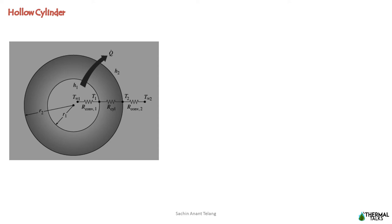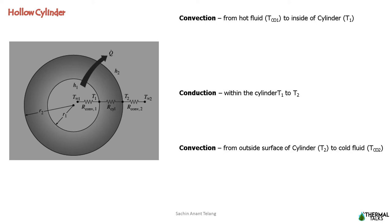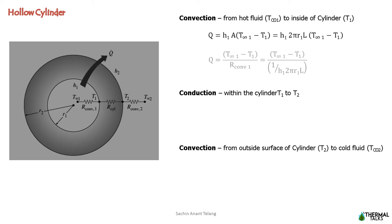Having evaluated conductive thermal resistance for the cylinder, we now analyze the full heat transfer mechanism. There is a hot fluid flowing inside the cylinder at temperature T∞1, and the outside surface is exposed to ambient fluid at temperature T∞2. Therefore, convection happens from the hot fluid to the inside surface, conduction happens within the cylinder, and again convection happens from the outside surface to the cold fluid. We can write convection as Q = H·A·ΔT.